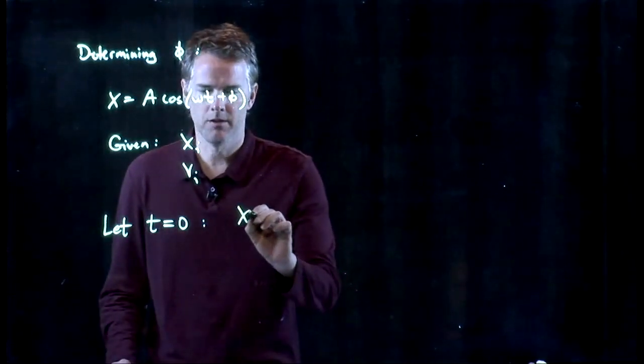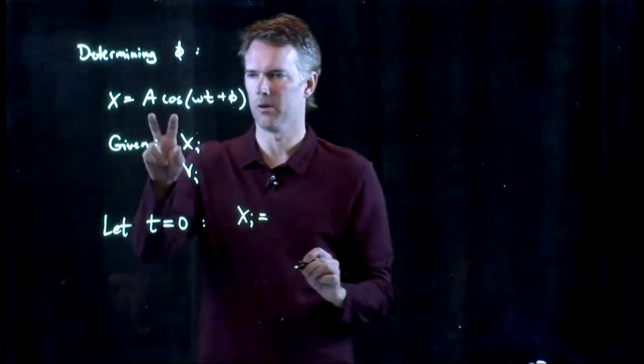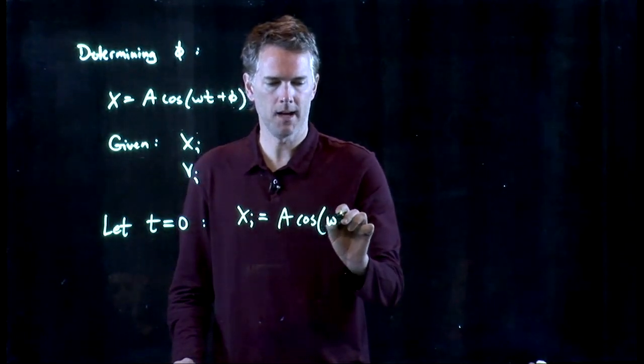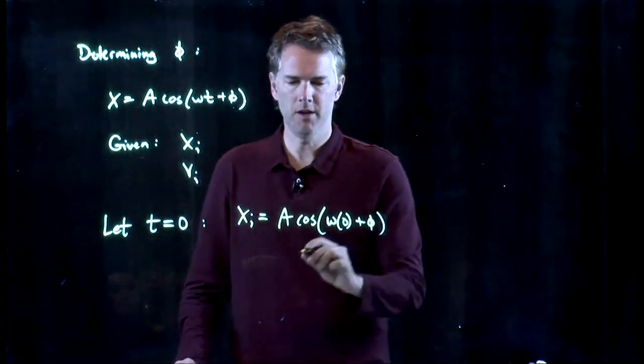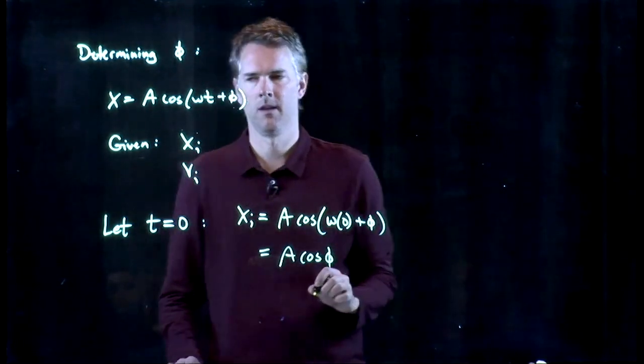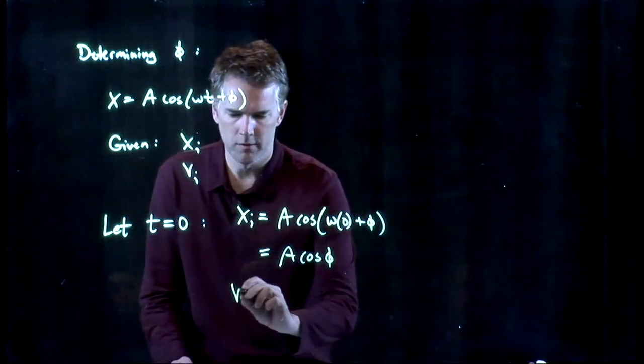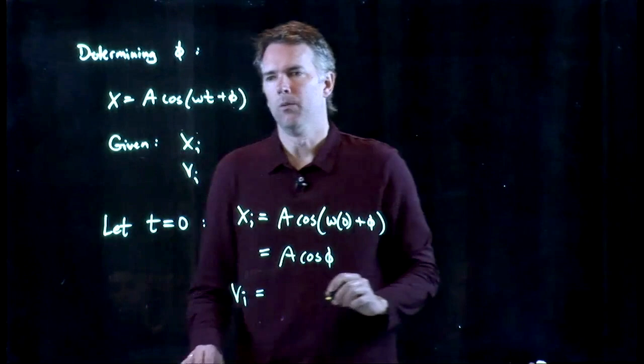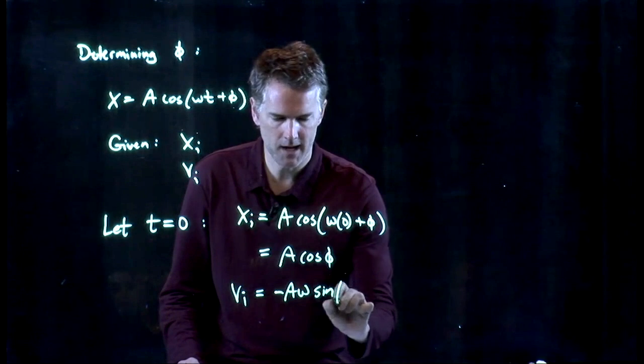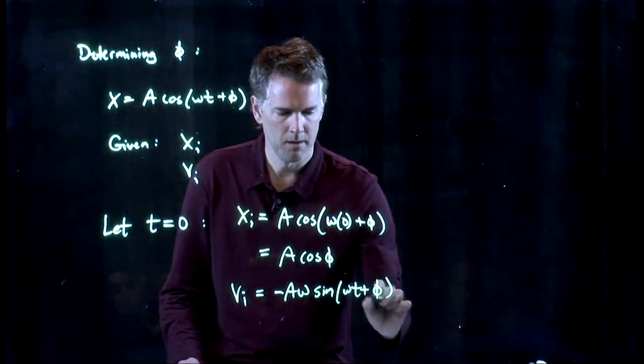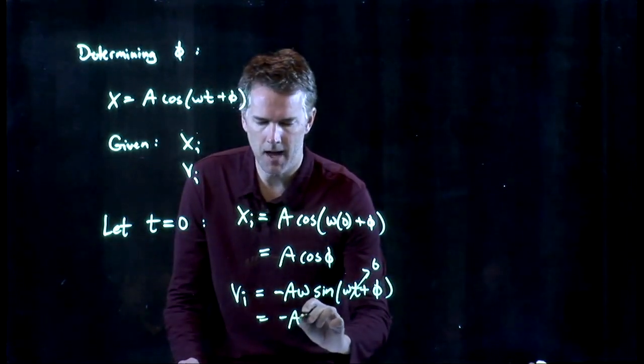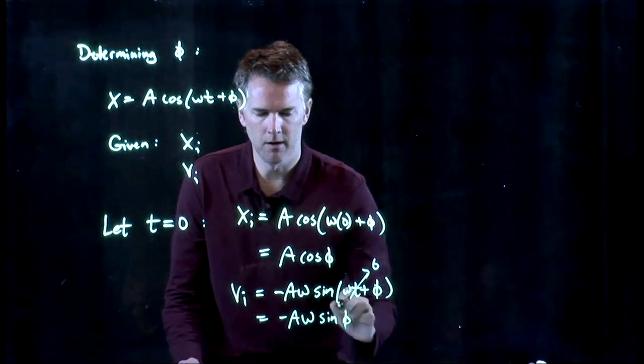And that means that x initial, according to this equation, is a cosine of omega times zero plus phi. So this just becomes a cosine phi. Initial velocity we know was negative a omega sine of omega t plus phi. But we're going to let that again equal zero. And so we get negative a omega sine of phi.